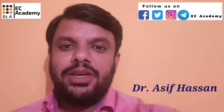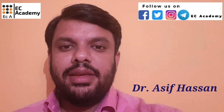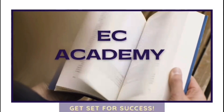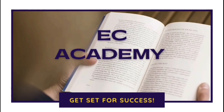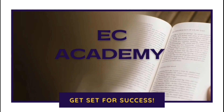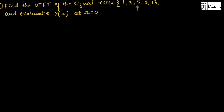Hello friends, welcome to ESA Academy. In this lecture, let us understand a problem on DTFT. Here we need to find the Discrete Time Fourier Transform of the given signal, and also we need to evaluate X of omega at omega is equal to 0.